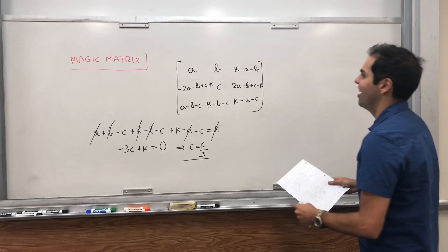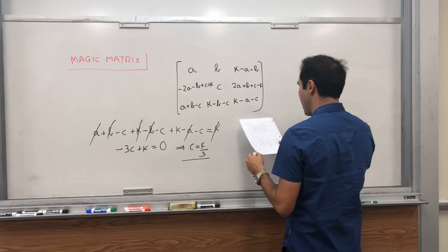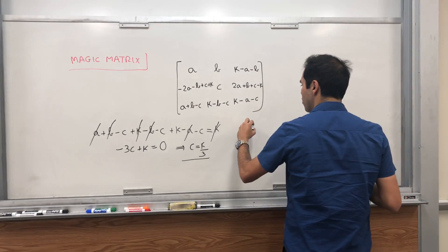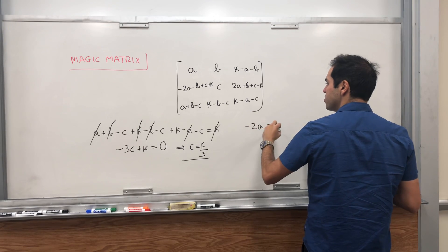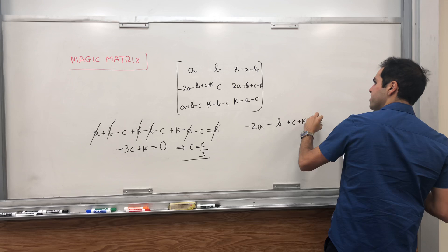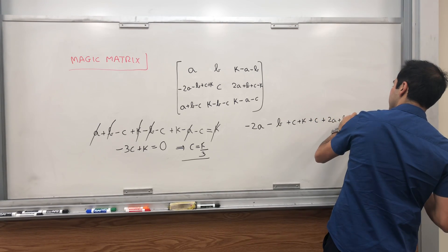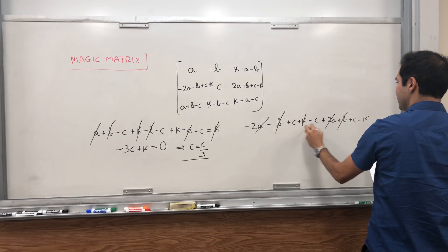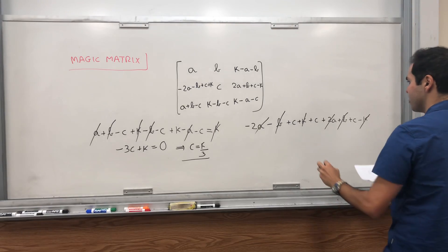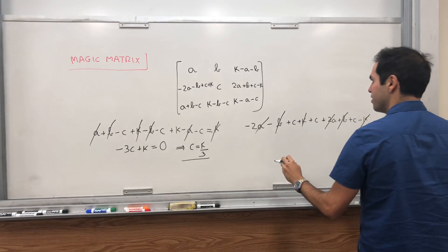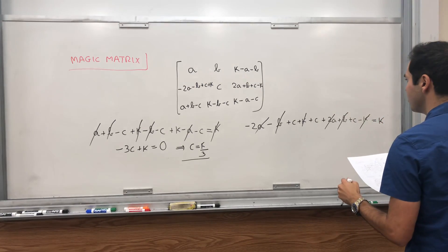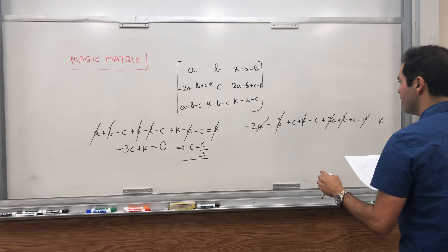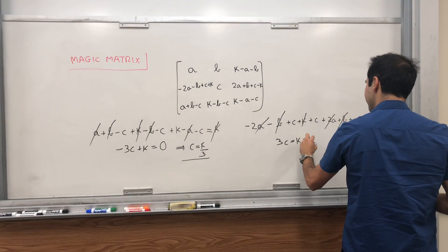So in fact, in all those things now we can just replace c with k over 3. And also, I think the very last thing to check is this row, and it turns out with our value for c we do get our cancellation. So minus 2a minus b plus c plus k, plus c, plus 2a plus b plus c minus k. Then what we get - we have this cancellation and then this cancellation and this cancellation - and we still get 3c equals k. So c equals k over 3.